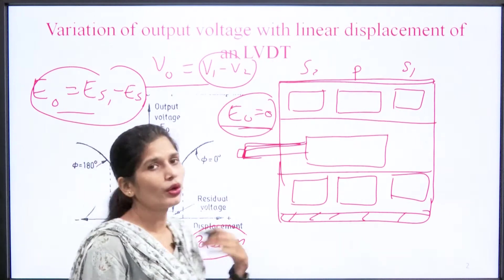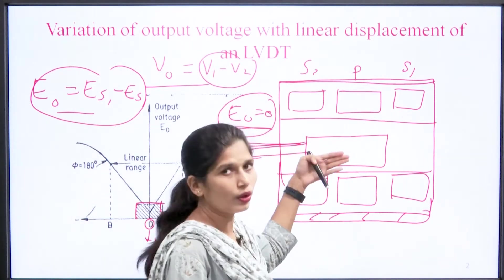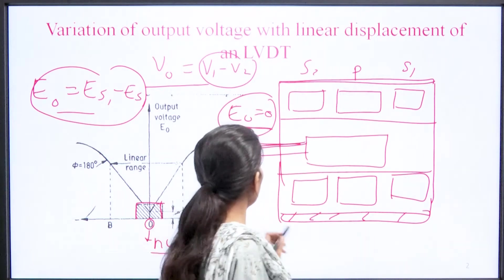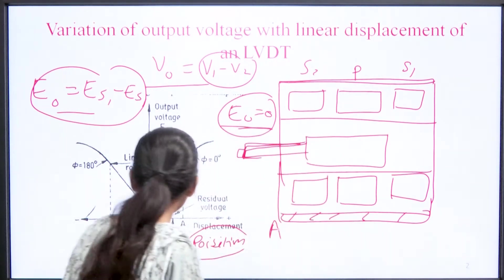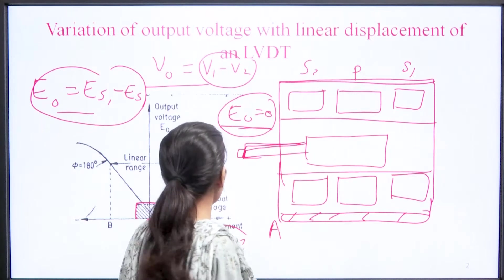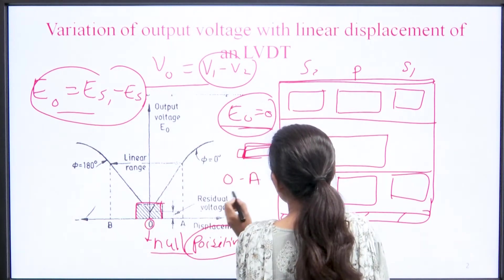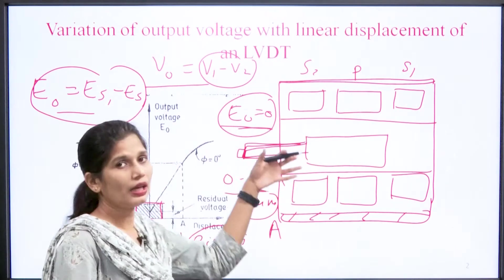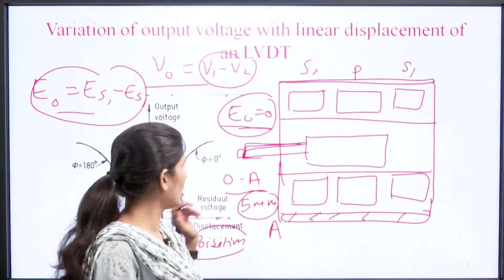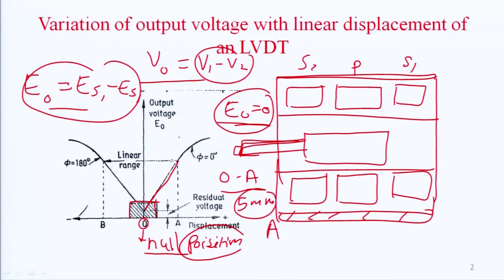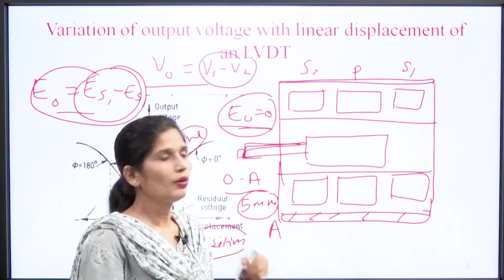After that, when the core moves — for example, if the core is moving in the left-hand direction — then the displacement with respect to that movement, let us suppose it is 'a'. That displacement will come in the positive direction and vary linearly up to about 5 mm. So up to 5 mm displacement, the value is positive when the soft iron core moves in the left-hand direction, and the resultant output voltage ES1 minus ES2 becomes positive.